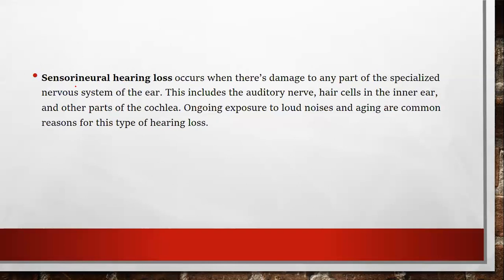Next is sensorineural hearing loss — related to damage to sensation or the neural pathway. It occurs when there is damage to any part of the specialized nervous system of the ear. This includes the auditory nerve, hair cells in the inner ear, and other parts of the cochlea. Any damage to the cochlea or auditory nerve can result in sensorineural hearing loss, and nerve conduction changes will automatically cause the patient to experience hearing loss.